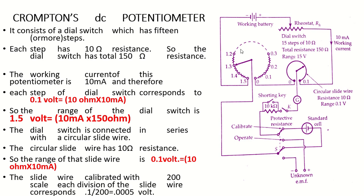Altogether, a battery and rheostat provide the 10 milliampere working current. The first large dial switch has 15 divisions with total resistance 150 ohm and total voltage 1.5 volt, with each division representing 0.1 volt. The second small circular slide wire has 200 divisions, total resistance 10 ohm, total voltage 0.1 volt, with each division representing 0.0005 volt.